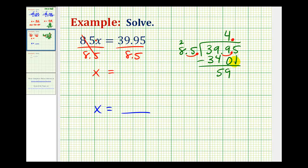Bring down the next digit, which is 5. Now we want to know how many 85s are in 595. If 4 times 85 was 340, we should probably try 6 or 7. Let's try 7.